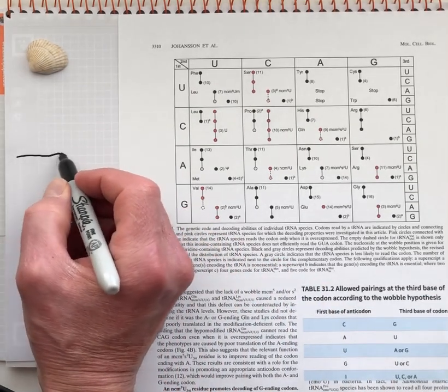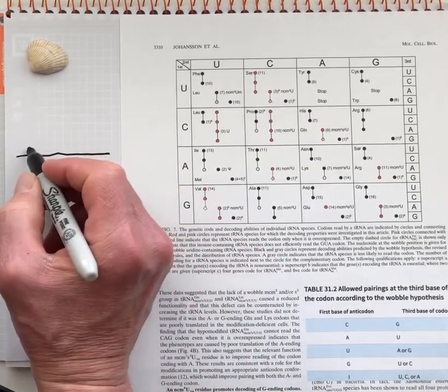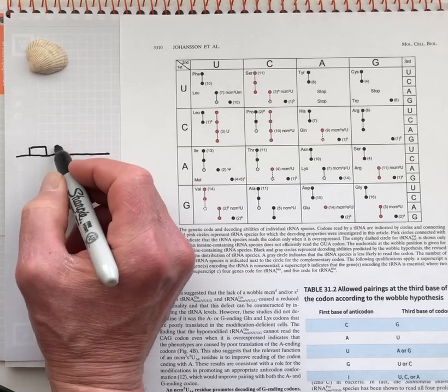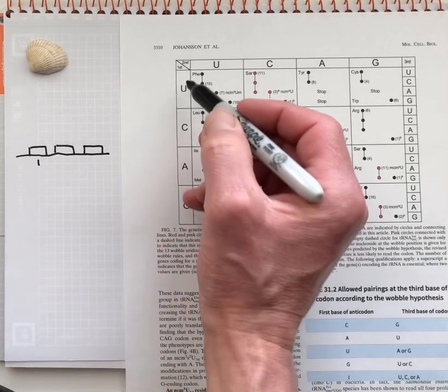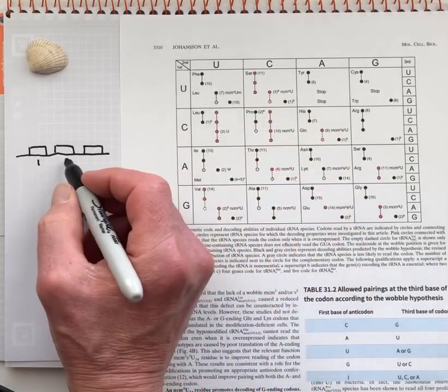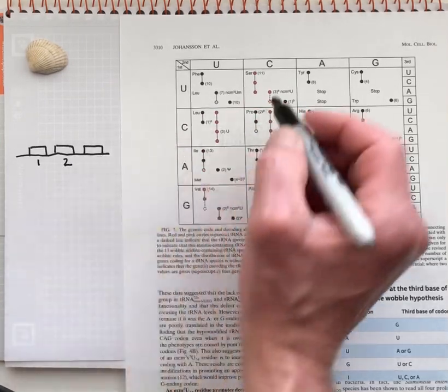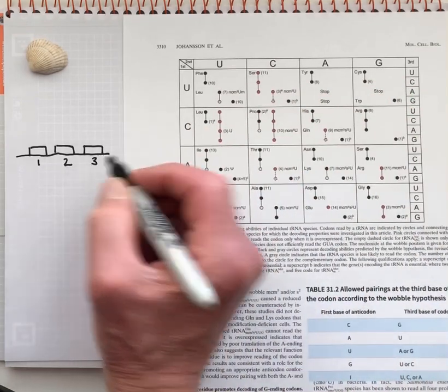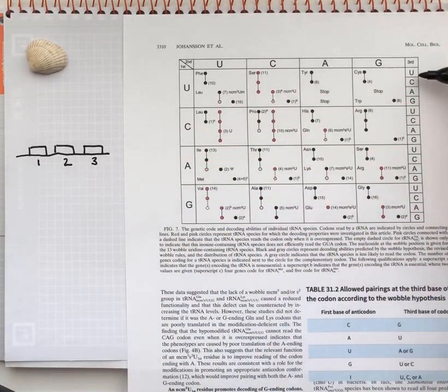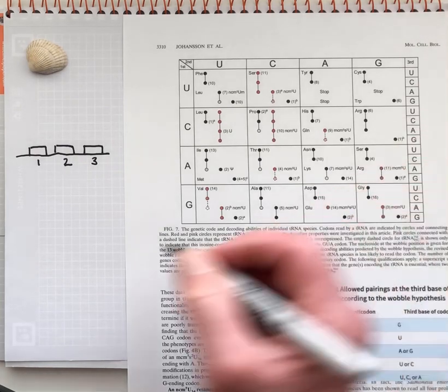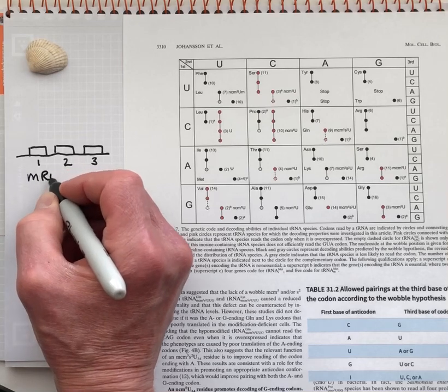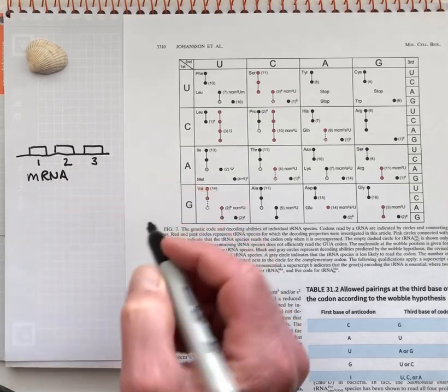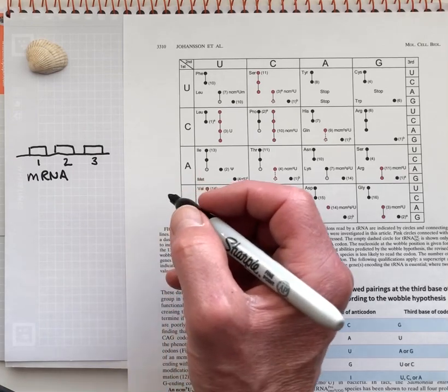So if we sketch here a codon on the messenger RNA with its three positions, we're talking about what is the nucleotide at this first position, at this second position as indicated here, and then at the third position as indicated by these little markers in the third column. And this is the messenger RNA. We always read the codons as if we have the messenger RNA in front of us.